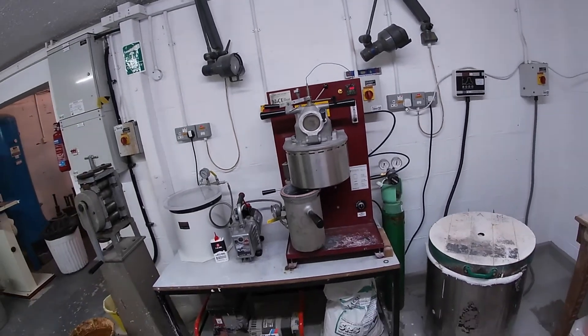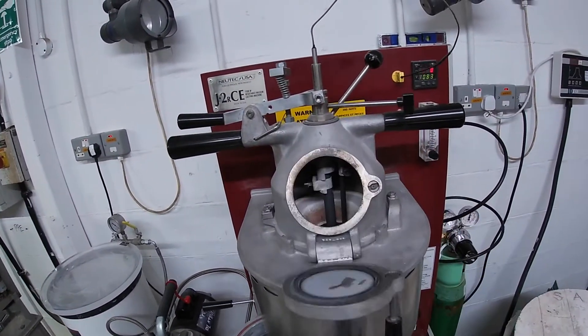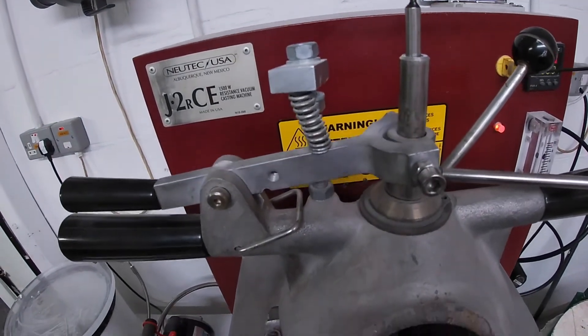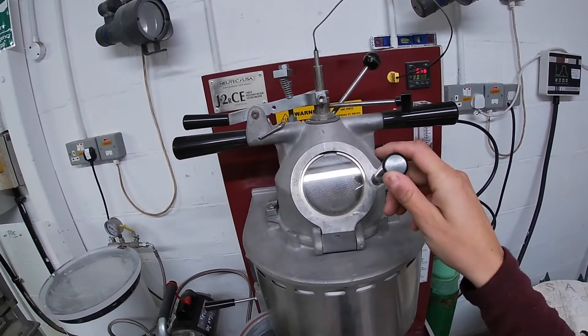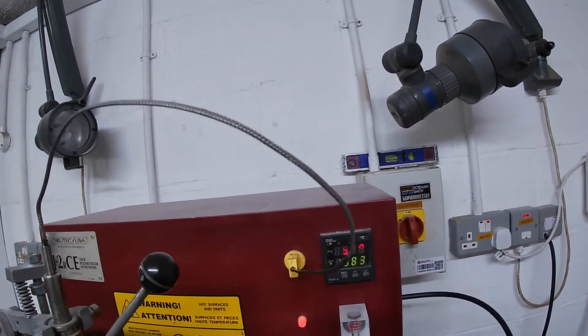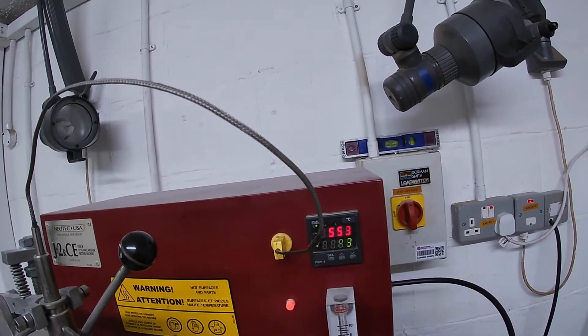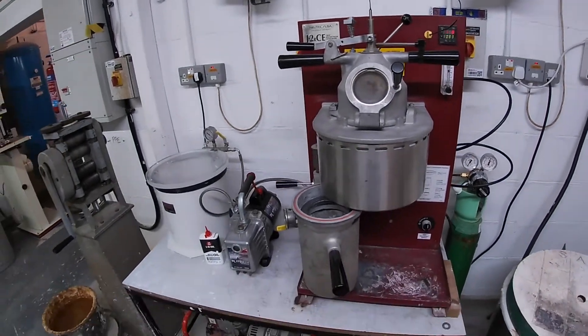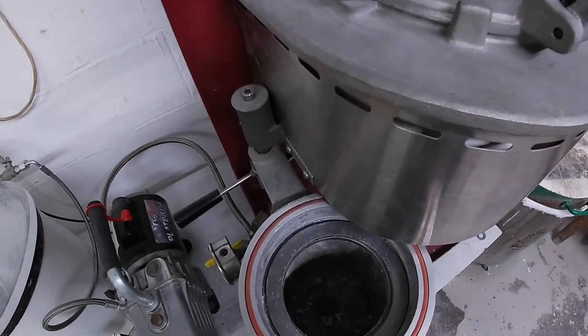We will be casting using a vacuum casting machine. First, we will have set the temperature to the melting point of our chosen metal, so for copper it is 1083 degrees Celsius. The top half of the machine contains the crucible and heating elements, and the bottom half of the machine is where our investment flask will go inside a vacuum chamber.